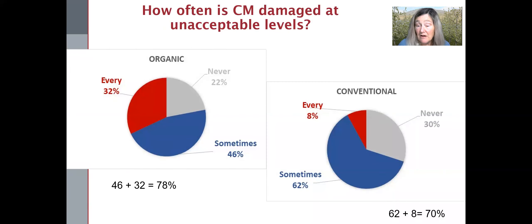So digging into the heart of the question, we asked: how often is damage at unacceptable levels? The 'sometimes' category is a little ambiguous and not terribly dissimilar between the two, and ditto for the category 'never.' The biggest difference probably was in 'every year,' which is quite a bit higher in organic,